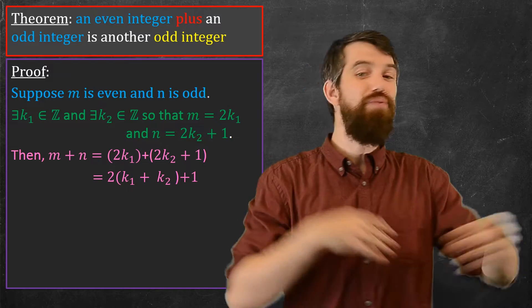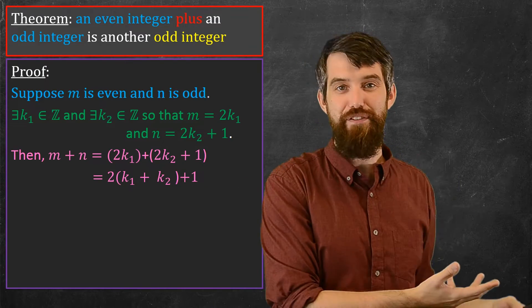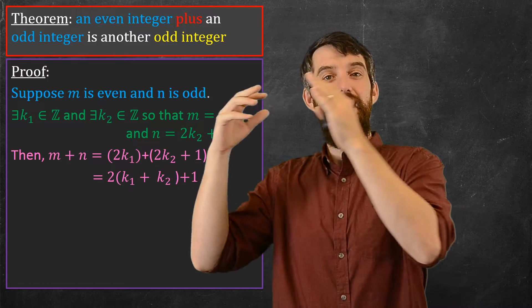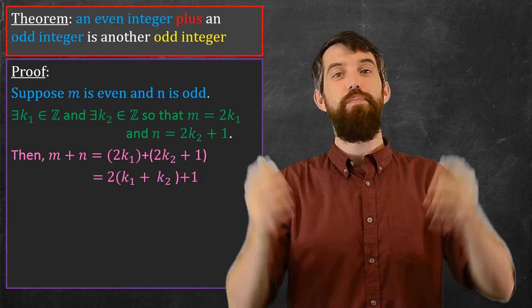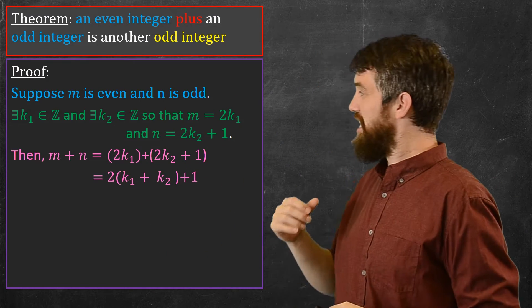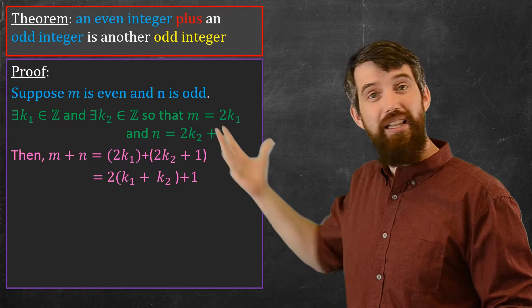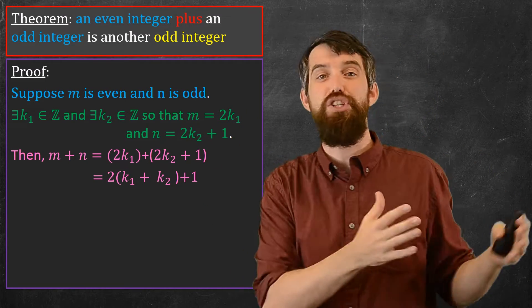And then if I do this little bit of manipulation, I can bring a 2 out of the factors. I can say this is twice times k1 plus k2 plus 1. So basically I just applied my definition here to the sum, and then I just did a little bit of algebra to pull a 2 out.